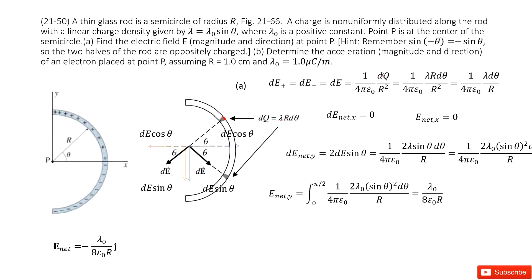Substituting dq inside, we can simplify the electric field magnitude to this expression. Because of mirror symmetry, for the bottom side, the magnitude of the electric field is equal — the charge it carries and the distance from the small fraction to position P are the same — so we get the same dE magnitude for the bottom side as well.